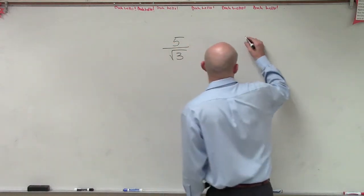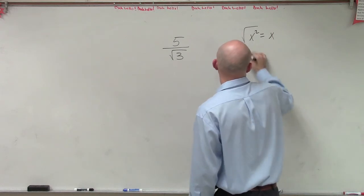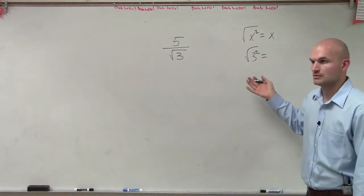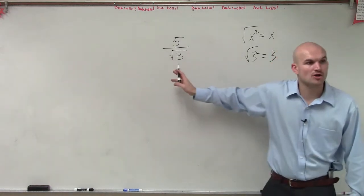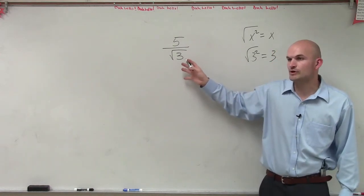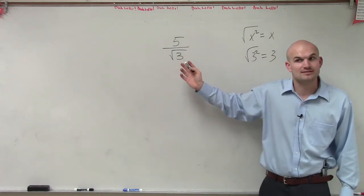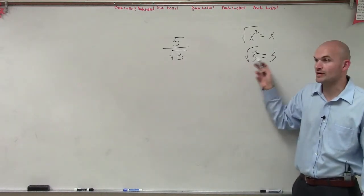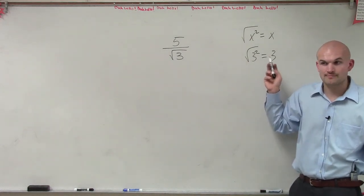Now, the only thing that we've learned is we know that the square root of x squared equals x. The square root of 3 squared equals 3. So if I can somehow multiply this to give me the square root of 3 squared, I can get rid of the square root. Does that make sense? If I can get this number to square root of 3 squared, I can get rid of the square root.